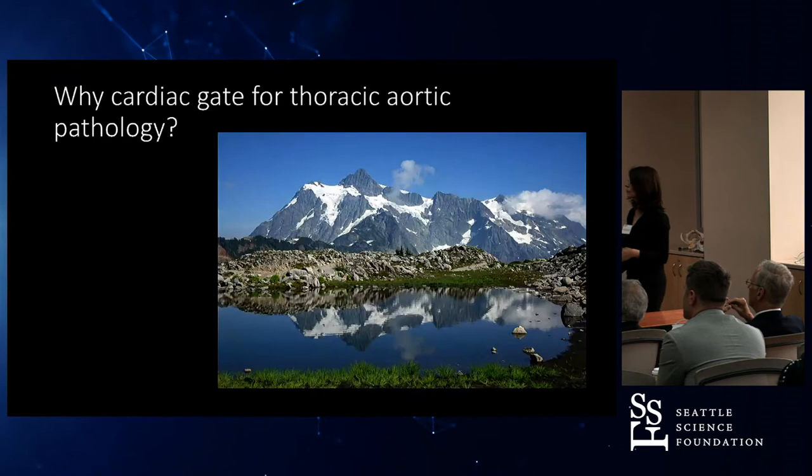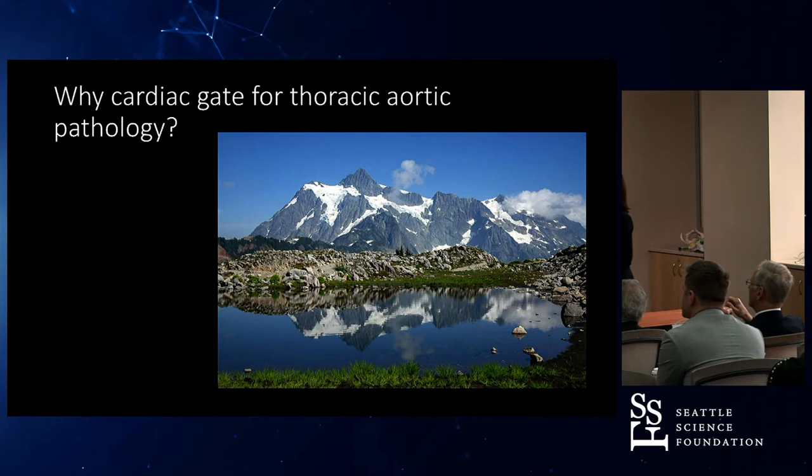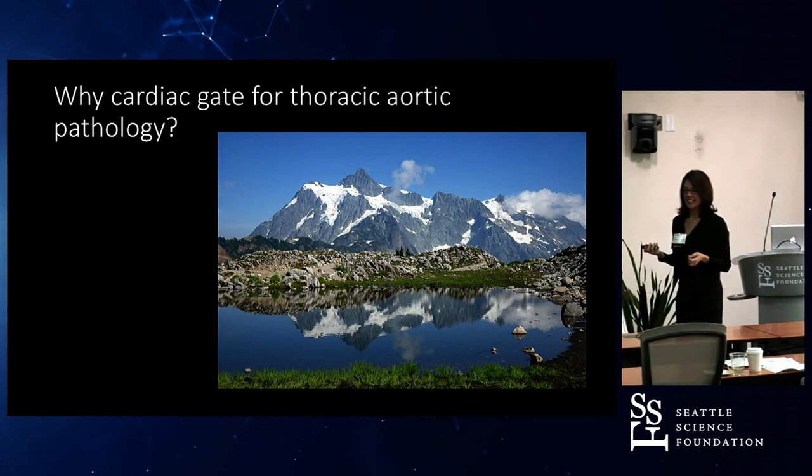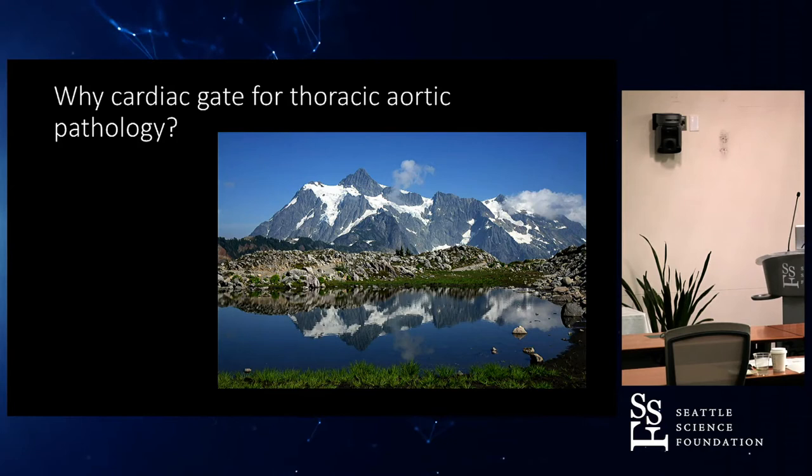So why cardiac gate for thoracic aortic pathology? Is it to get the clear delineations of the pulse? Just less motion. Because sometimes you see the aortic root and you're like, I don't know — is it moving, or is it a dissection? If it's not moving, you can really see it clearly and determine if it's a dissection or not.